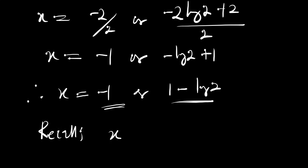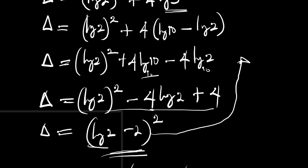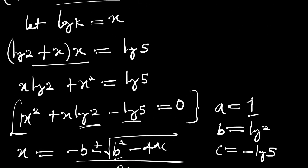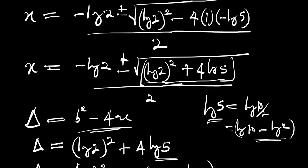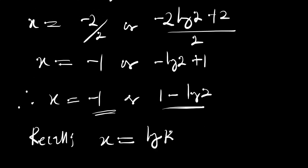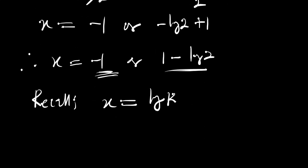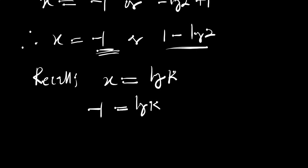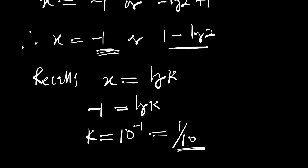Recall that we had x equals log of k. So from here we solve for k. When x equals negative 1, we have negative 1 equals log of k, which means k equals 10 to the power of negative 1, which equals 1 over 10. This is one of the log identities, and this is one of the values for k.